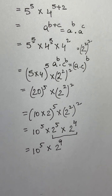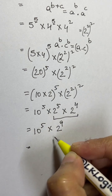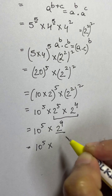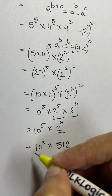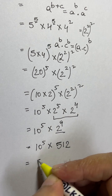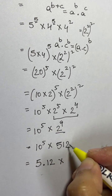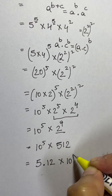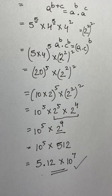Now 10 to the power of 5 is 100,000. And 2 to the power of 9 equals 512. Writing this in scientific notation: 512 becomes 5.12, and since we moved two decimal places, we add 2 to the power of 5, giving 10 to the power of 7. So the final answer is 5.12 times 10 to the power of 7.